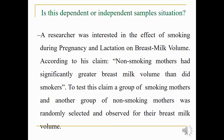Two different independent groups were taken: a smoking group and a non-smoking group. Both groups are different and independent. When you have independent groups and independent samples, you apply the independent t-test. So this is an independent sample situation, and we have to apply the two-sample independent t-test.